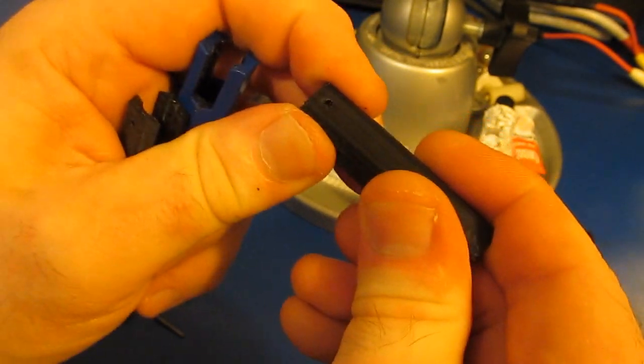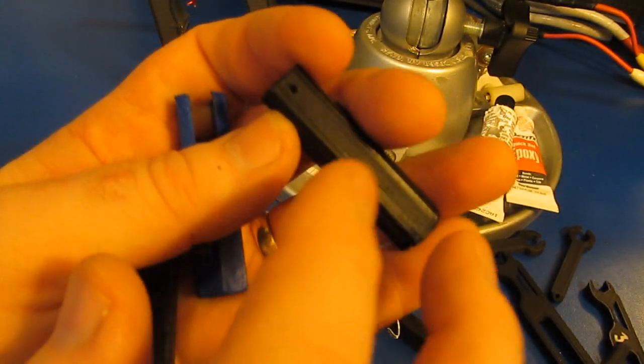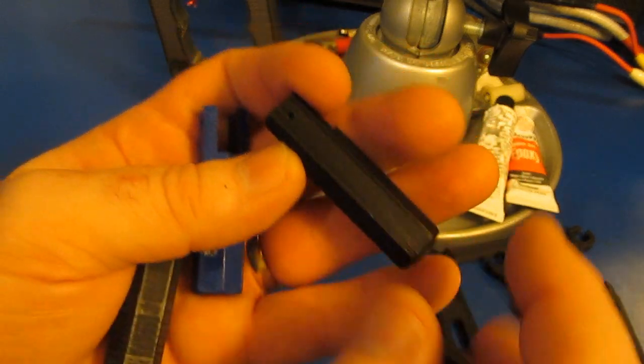So Flipper changed the direction to print lengthwise. Of course, this gives it a lot more strength. So I'd recommend, if you're going to make one of these, print it lengthwise.